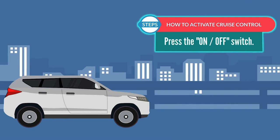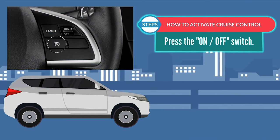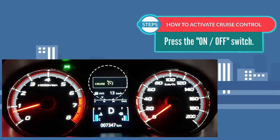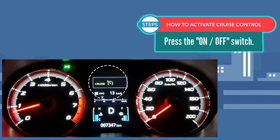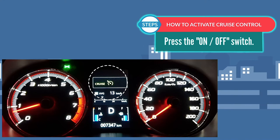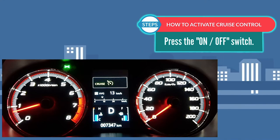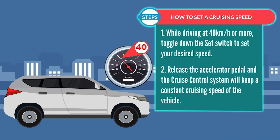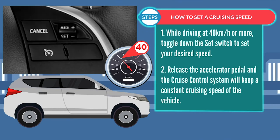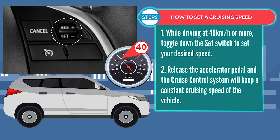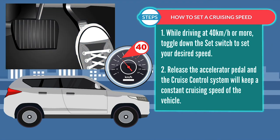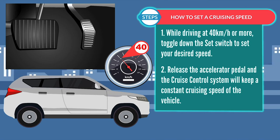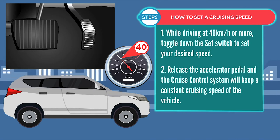To activate Cruise Control, press the on-off switch. This indicator will come on when the Cruise Control on-off switch is pressed to turn on the Cruise Control system. While driving at 40 kmph or more, toggle down the set switch to set your desired speed. Release the accelerator pedal and the Cruise Control system will keep a constant cruising speed of the vehicle.